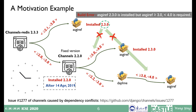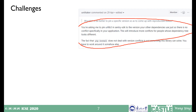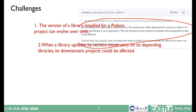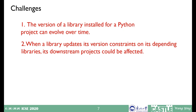In fact, this real issue is only a tip of the iceberg in the Python ecosystem. Developers' complaints about dependency conflicts can be seen everywhere in the open-source community. Because of a lack of global view on version constraints among large numbers of Python projects, developers complain that some library version constraints only work in their own projects or only on their own machine, causing more conflicts in many other projects. The version of the library installed for Python projects can evolve over time, and when a library updates its version constraint on its dependencies, its downstream projects could be affected.